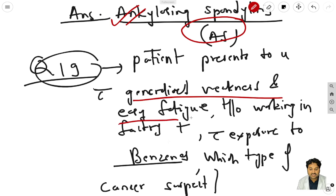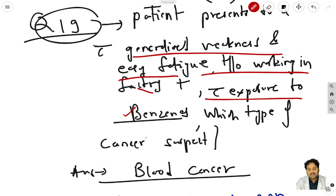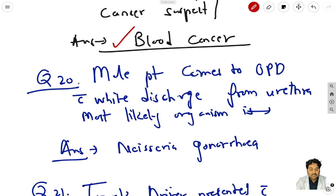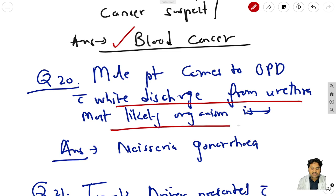Question 19: a patient presents with generalized weakness and easy fatigue with history of working in a factory with exposure to benzene - which type of cancer do you suspect? The answer is blood cancer. Don't confuse it with bladder cancer; it is blood cancer (leukemia).